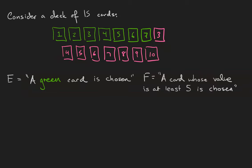Consider a deck of 15 cards. We've got 7 green cards labeled 1-7, and 8 pink cards labeled 3-10. The event E is that a green card is chosen. The event F is that a card whose value is at least 5 is chosen. Remember that means 5, 6, 7, 8, 9, or 10. The cardinality of our sample space is 15.